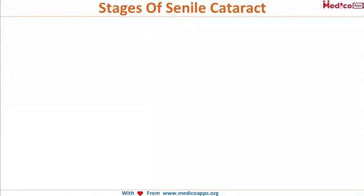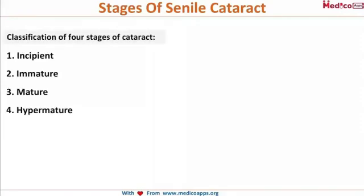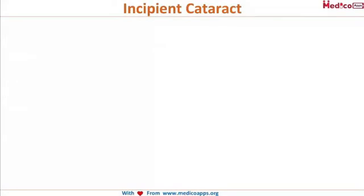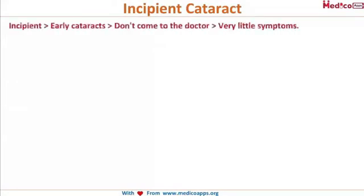That is senile cataract. There are four stages: the incipient type, the immature stage, the mature stage, and the hypermature stage. Incipient becomes immature, immature becomes mature, and then that becomes hypermature.